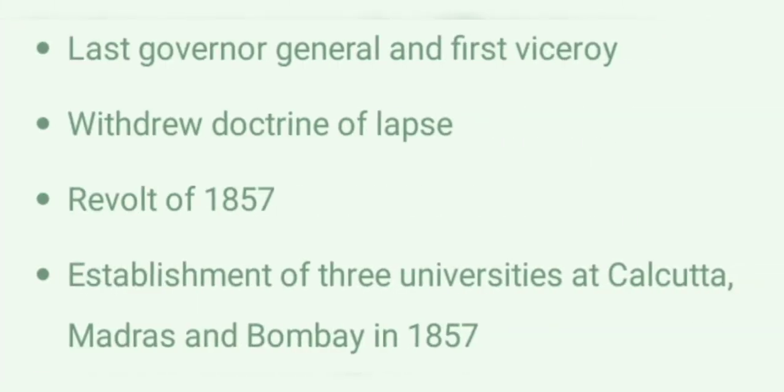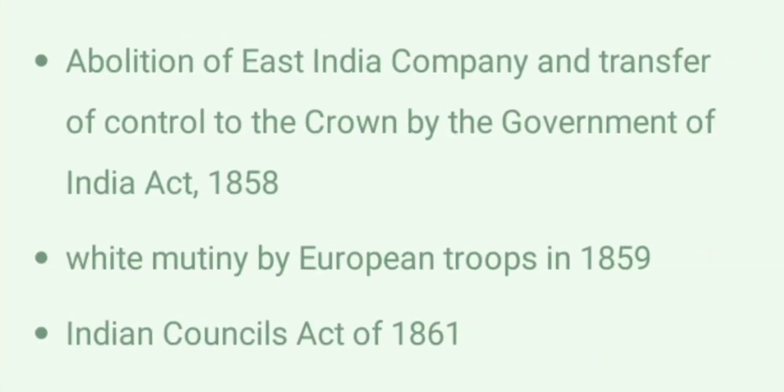Lord Canning, 1856 to 1862. Last Governor General of India and 1st Viceroy. Withdrew Doctrine of Lapse. Revolt of 1857. Establishment of three universities at Calcutta, Madras and Bombay in 1857. Abolition of East India Company and transfer of control to the Crown by Government of India Act 1858.